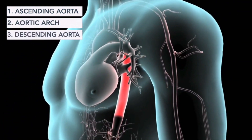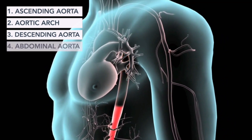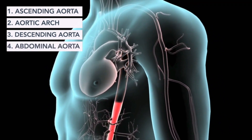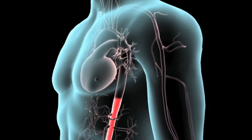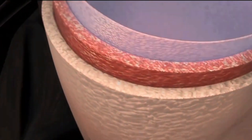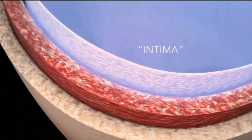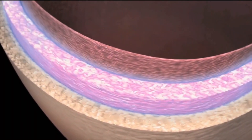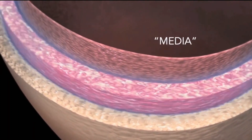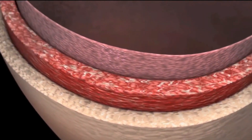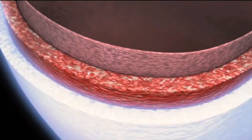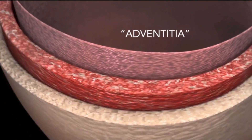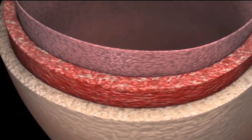The aorta comprises a thin inner layer called the intima, a thick elastic middle layer called the media, and a thin outer layer called the adventitia. These layers allow the aorta to absorb the force of the blood as it is pumped from the heart to the rest of the body.